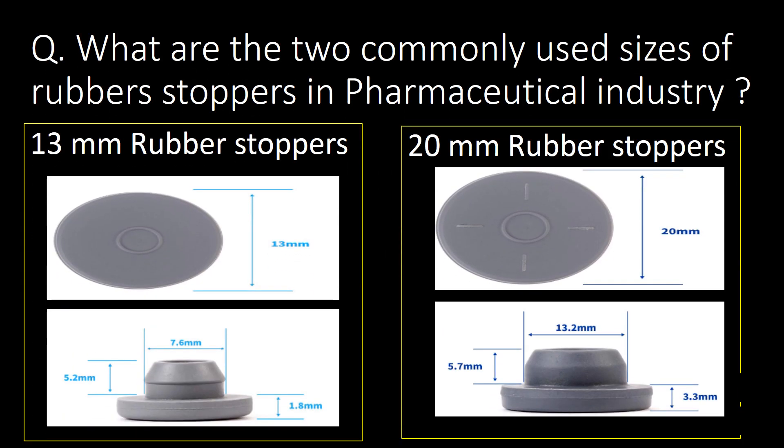We will start the series with a very basic question: what are the two commonly used sizes of rubber stoppers in the pharmaceutical industry? 13 mm rubber stoppers and 20 mm rubber stoppers are commonly used in the pharmaceutical industry.